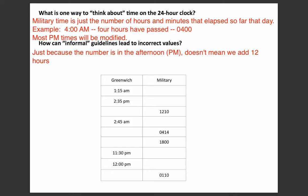When we write numbers in military time, we don't use a colon and we don't use a.m. or p.m. It's just four digits, where the first two digits are the number of hours that have passed in that day, and the last two digits are the number of minutes that have passed within that hour.